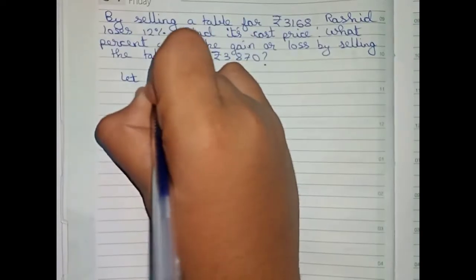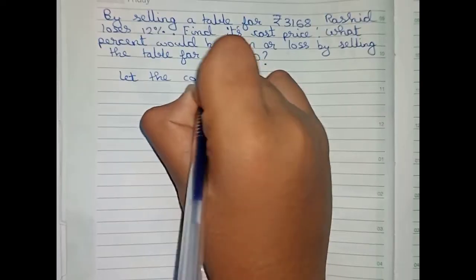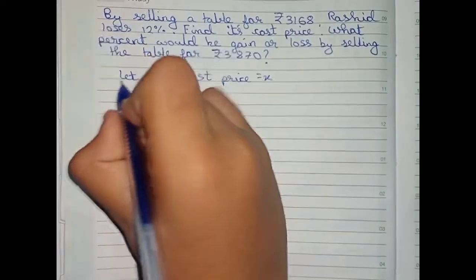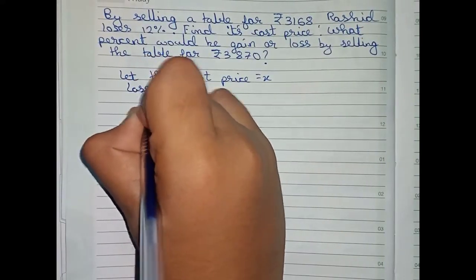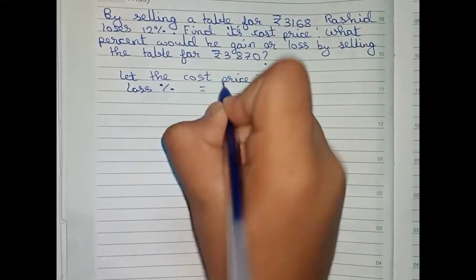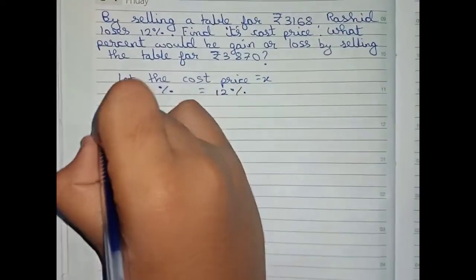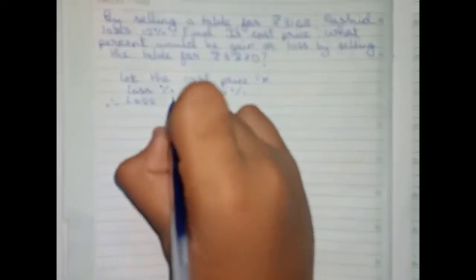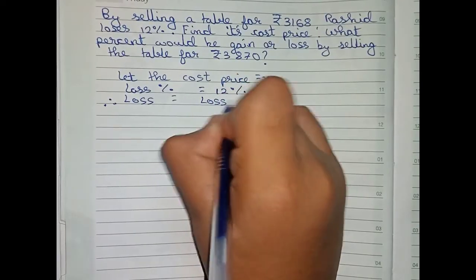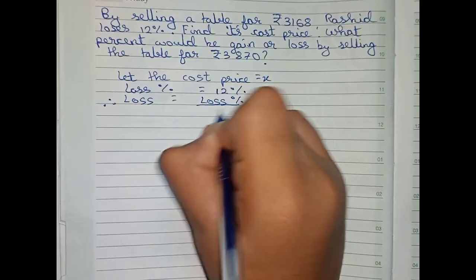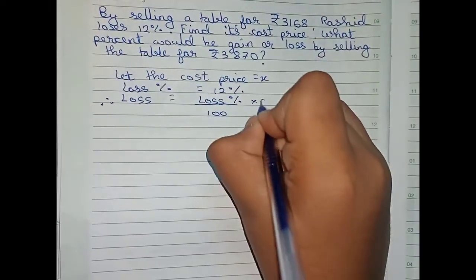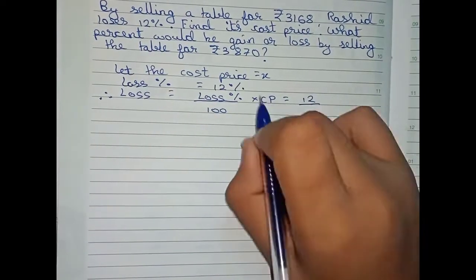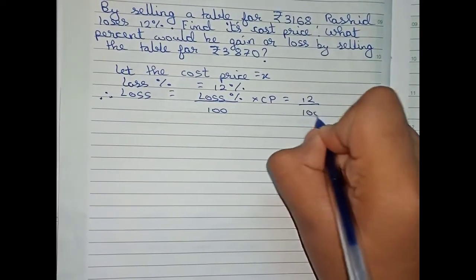To solve this, first we write: let the cost price equal x. Now the loss percentage is equal to 12 percent, as given in the question. Therefore we find the loss amount, which equals loss percentage divided by 100, into CP — that is 12 by 100 into x.